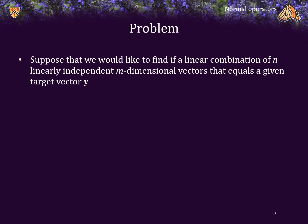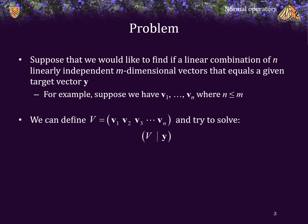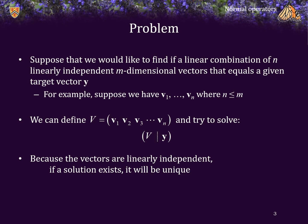Let's go back to an older problem. Suppose that we would like to find if a linear combination of n linearly independent m-dimensional vectors equals a given target vector y. Suppose we have these n vectors where n is less than or equal to m. After all, if n was greater than m, these vectors could not be linearly independent. So n must be less than m. What we can do is define the matrix V comprised of these vectors as the columns of V, and then attempt to solve the system of linear equations where the target vector is y. Because the vectors are linearly independent, if a solution exists, it will be unique.